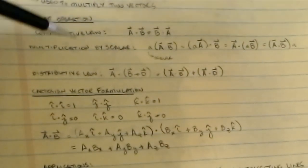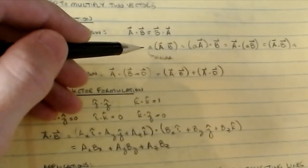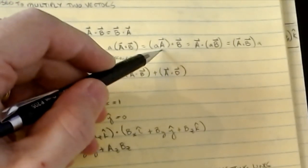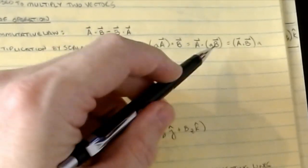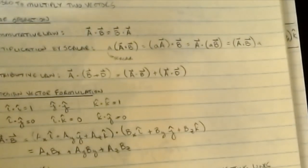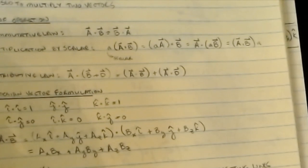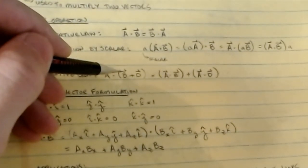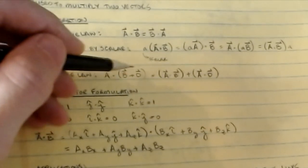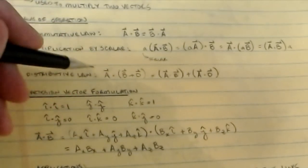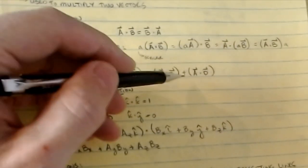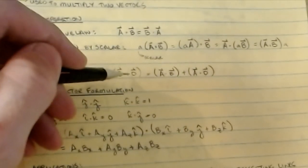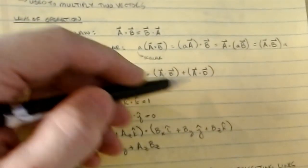For multiplication by a scalar — if I have a scalar constant and I multiply it into A·B — there are several equivalent options: I can multiply the scalar into A and then dot into B, or multiply it onto B and then dot them together, or dot them first and then multiply by the scalar. For the distributive law, if I have a vector sum B plus D dotted with A, that equals A·B plus A·D — similar to the FOIL operation from algebra, but now with dot product operations.